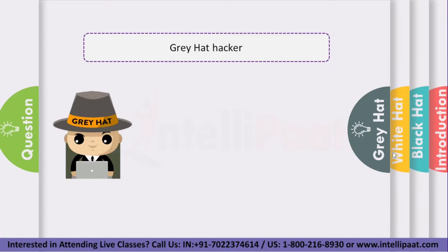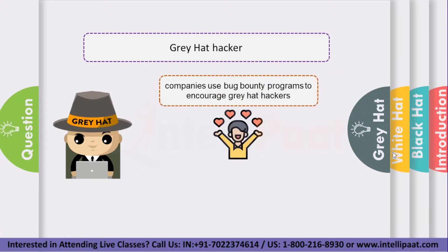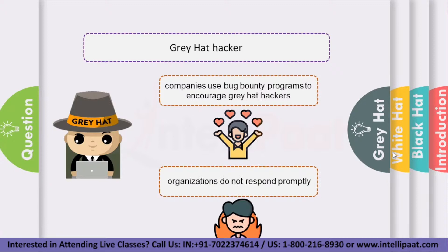How do grey hat hackers work? I will tell you both scenarios where grey hat hackers can become either a white hat or a black hat hacker. Some companies use bug bounty programs to encourage grey hat hackers to report their findings. In these cases, organizations provide a bounty to avoid the broader risk of having the hacker exploit the vulnerability for their own gain. Sometimes, if organizations do not respond promptly or do not comply, the grey hat hackers may become black hats by posting the point of exploitation on the internet or even exploiting the vulnerability themselves.